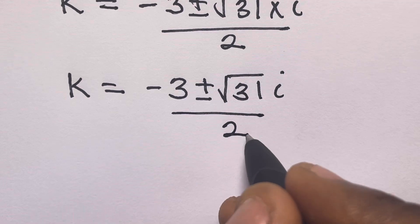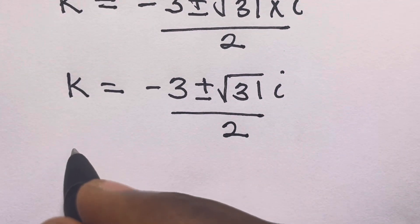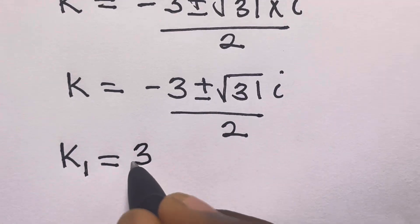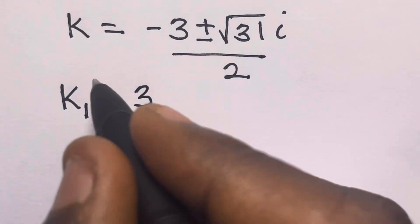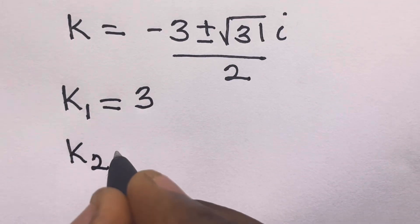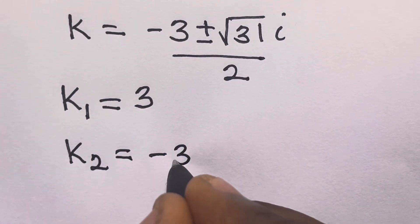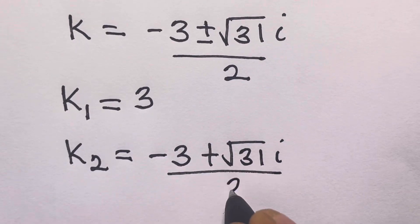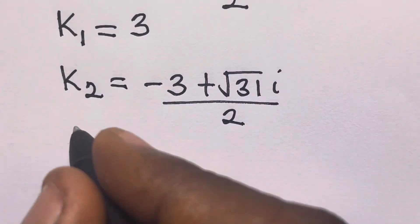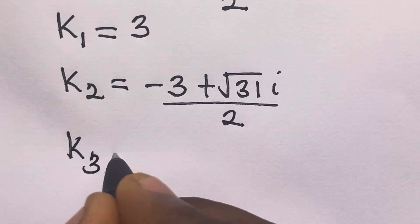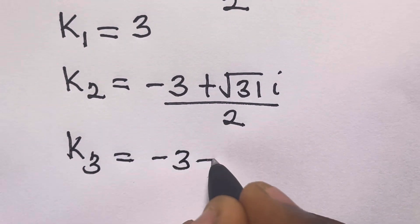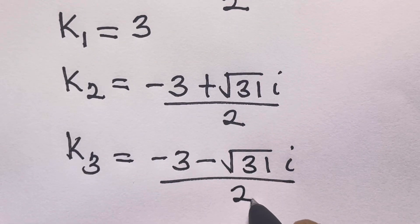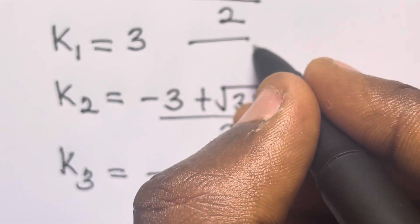So k equals (minus 3 plus or minus square root of 31 · i) divided by 2. Our first solution k1 equals 3 (real). Our k2 equals (minus 3 plus square root of 31·i) divided by 2, and k3 equals (minus 3 minus square root of 31·i) divided by 2 — both complex solutions.